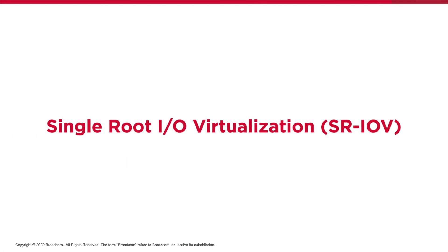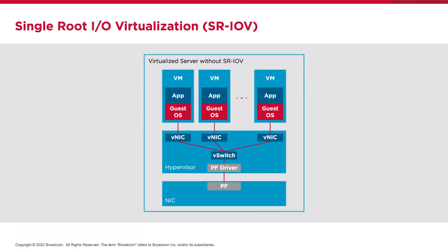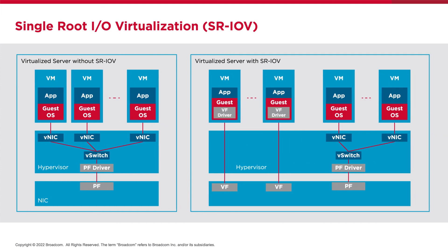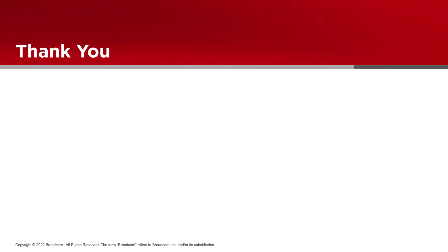In this final slide, we can see the differences between a traditional virtualized server without SR-IOV versus with SR-IOV. On the left, we have a single NIC physical function assigned to a V switch and then VNICs, which are assigned to the VMs. On the right, we again have a single NIC physical function configured with VNICs and SR-IOV VFs in a combination. Thanks for watching.